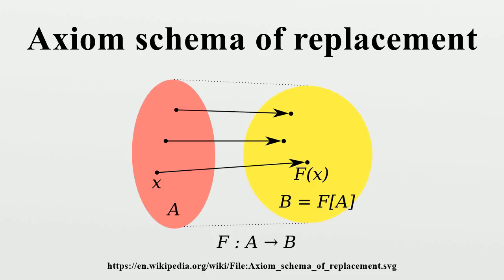Statement. Suppose P is a definable binary relation such that for every set X there is a unique set Y such that P holds. There is a corresponding definable function F, where F equals Y if and only if P. F will also be a proper class if P is. Consider the class B defined such that for every set Y, Y is in B if and only if there is an X in A with F equals Y. B is called the image of A under F.